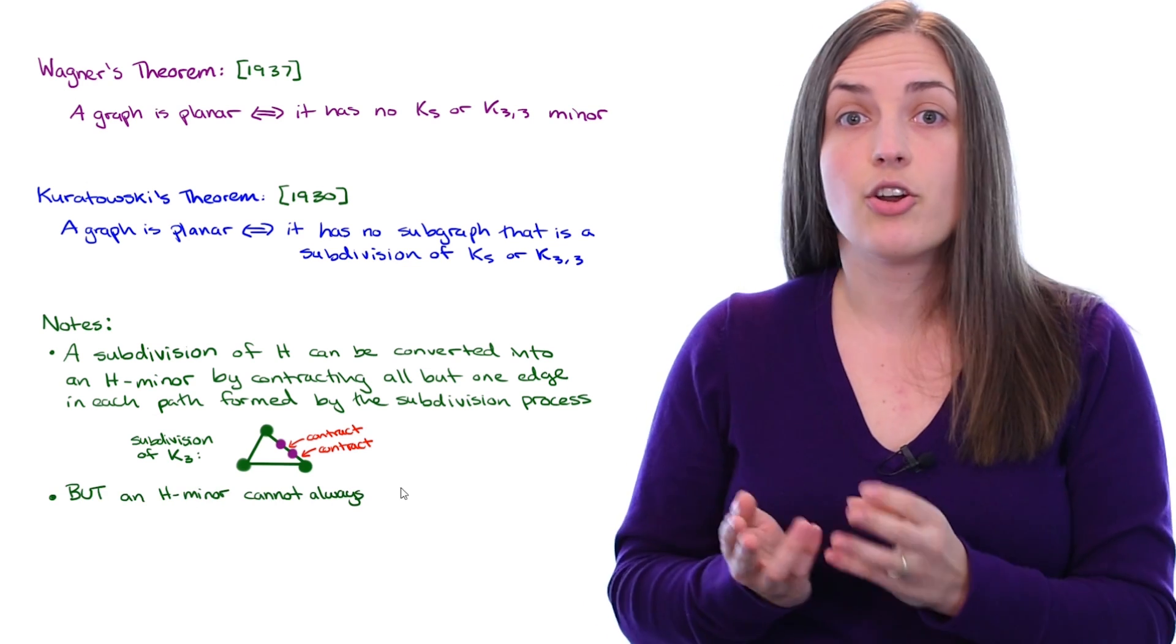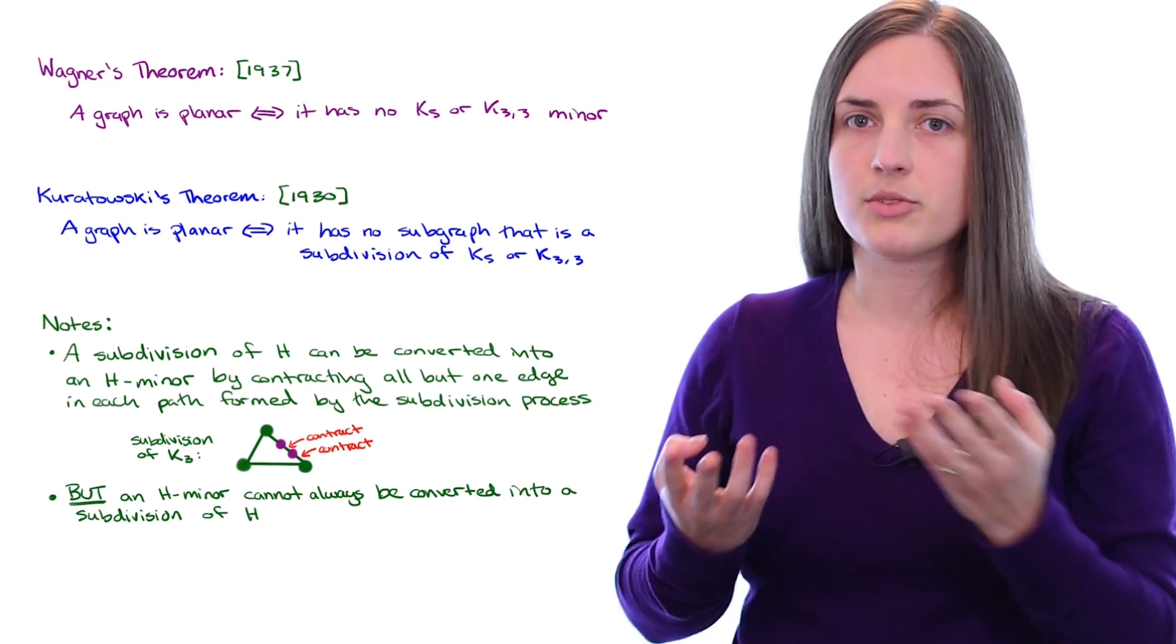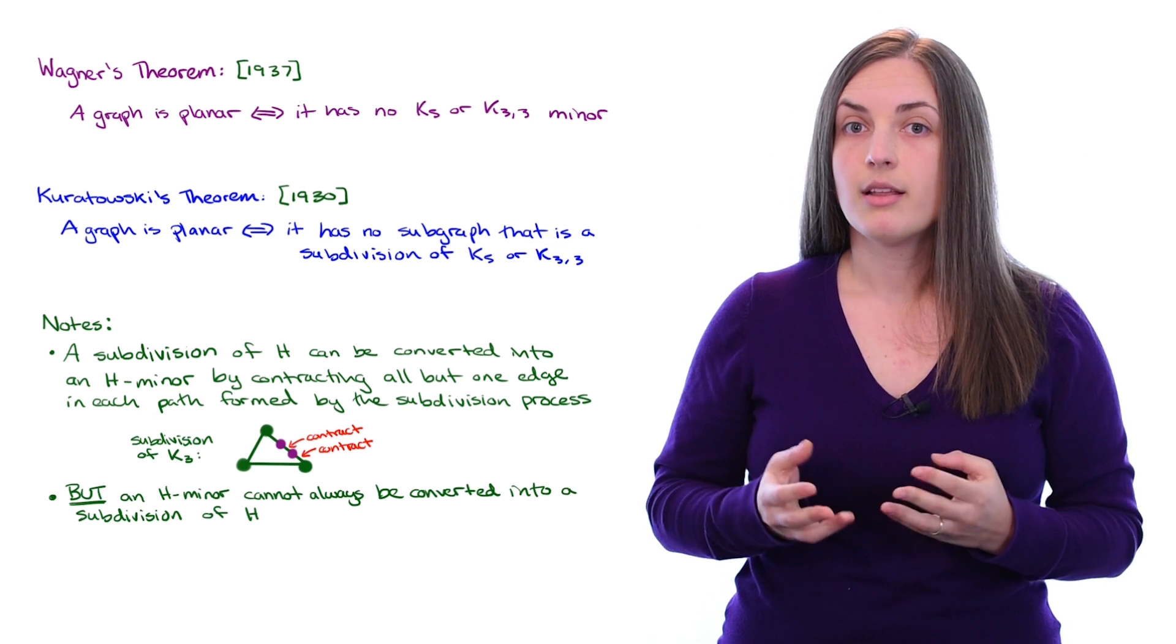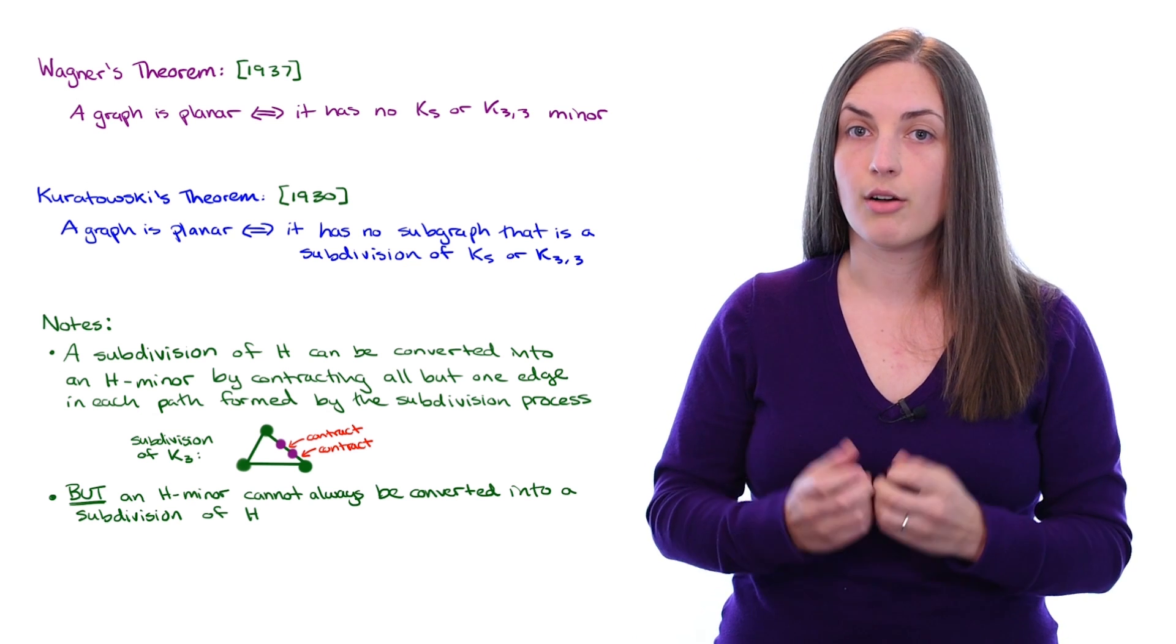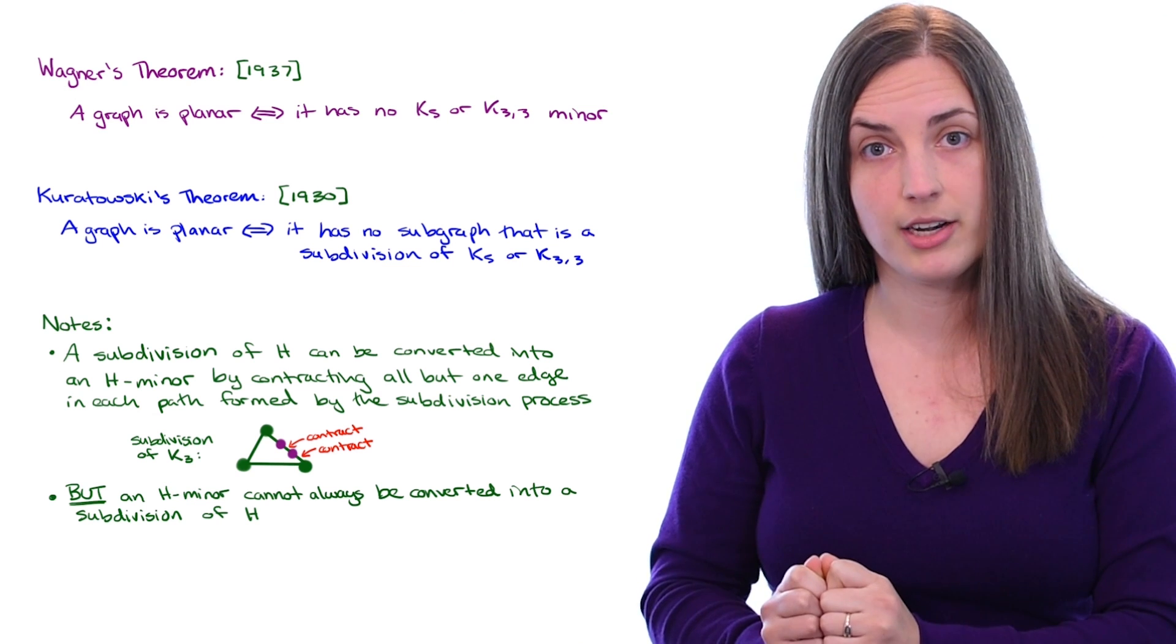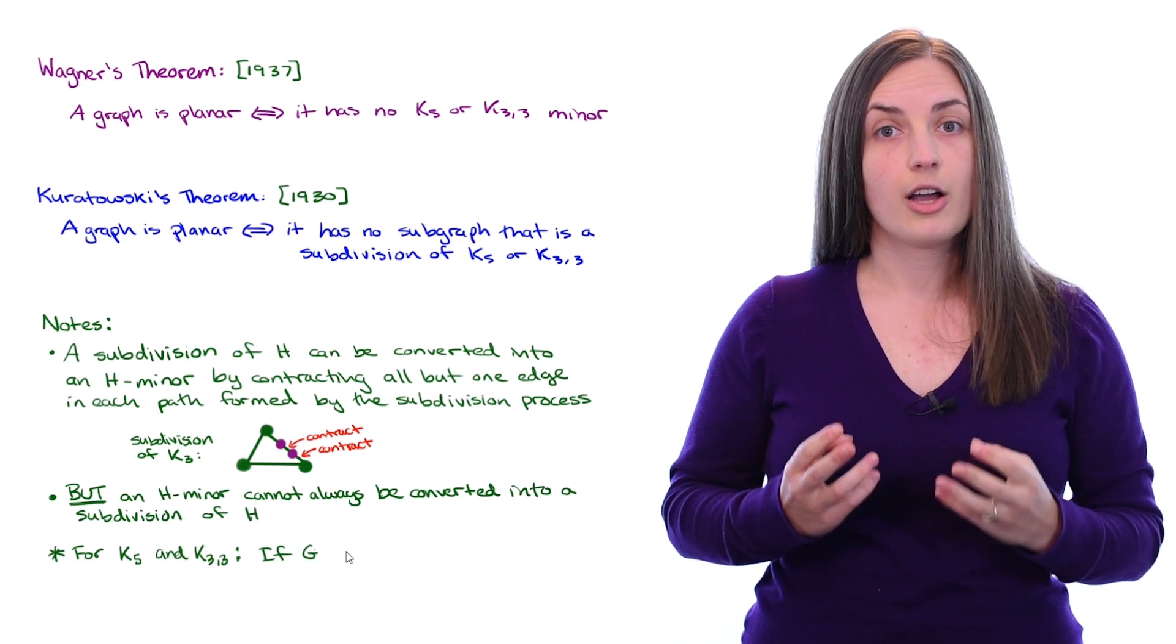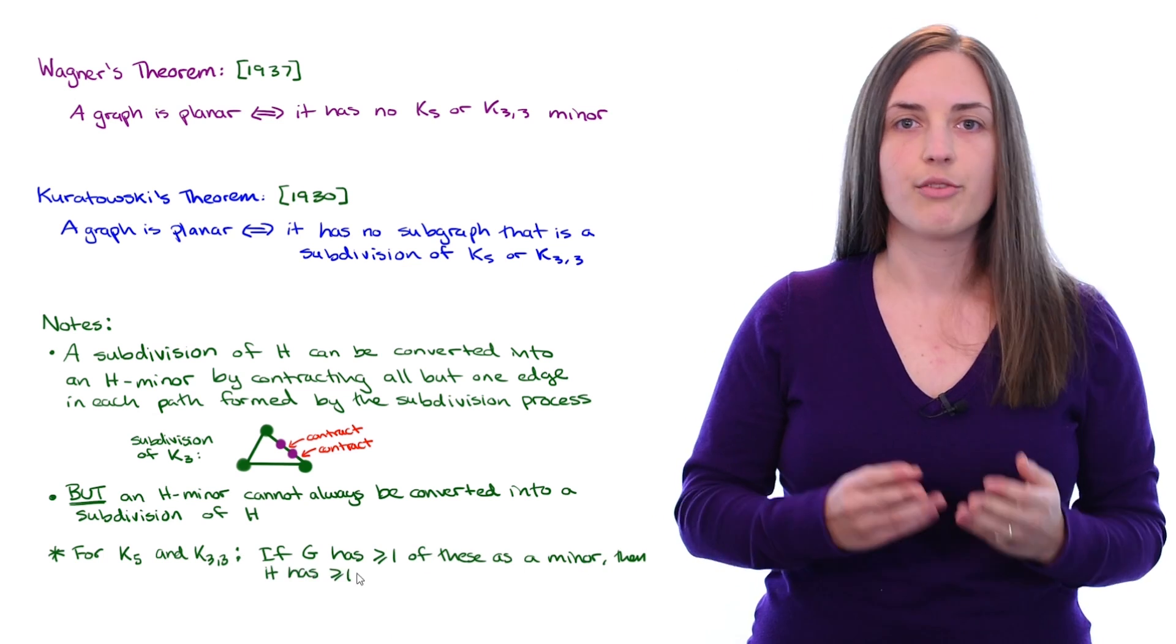But an H minor cannot always be converted into a subdivision of H. So you ask, how is it that these two theorems work out to both be characterizations of planar graphs? We already know that if a graph had a subdivision which was a subdivision of K5 or K33, then it would also have one of those minors. But how do you go the other way? Even though having specifically a K5 minor won't necessarily tell you that you have a K5 subdivision, we do know the following fact for K5 and K33.